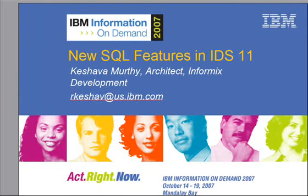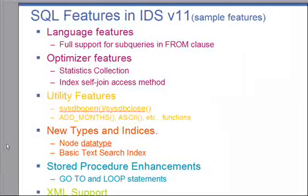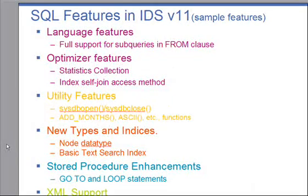Hi, this is Keshav Moorthy, architect for the Informix SQL group. Today I'll be talking about the new features in IDS version 11 release. Let's look at a sample of features we have in IDS 11. We have improvements in the language, syntax and semantics. Our optimizer has improvements in terms of statistics, automatic statistics selection for the create index process, improvements in the explain file, and a new access method called index self-join access method. We have improvements in the utility features, new types and indices, improvements to our stored procedure language, and additional XML support to IDS as well.